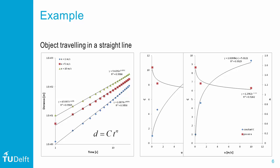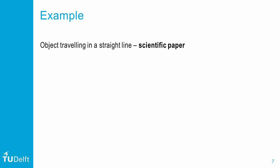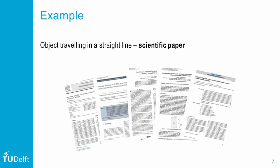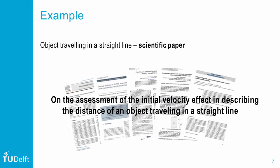Here is magic moment number two. If the R squared value is high, say above point nine, we are generally satisfied. This trend line must be good. And now we can make predictions, so let us draft a paper on the assessment of the initial velocity effect in describing the distance of an object traveling along a straight line.